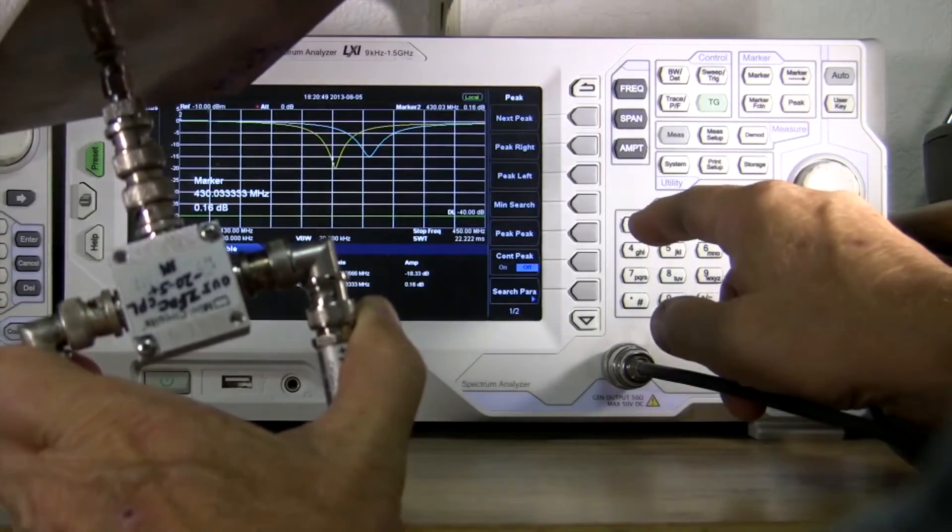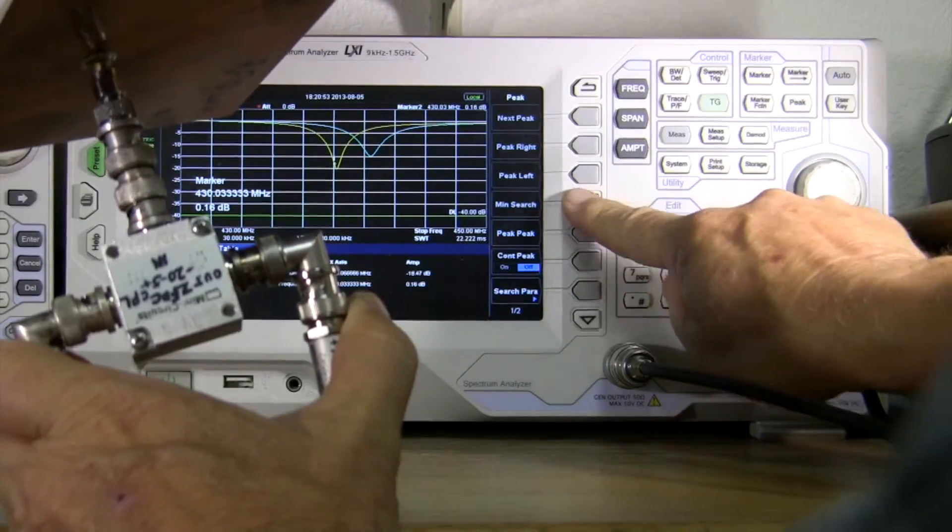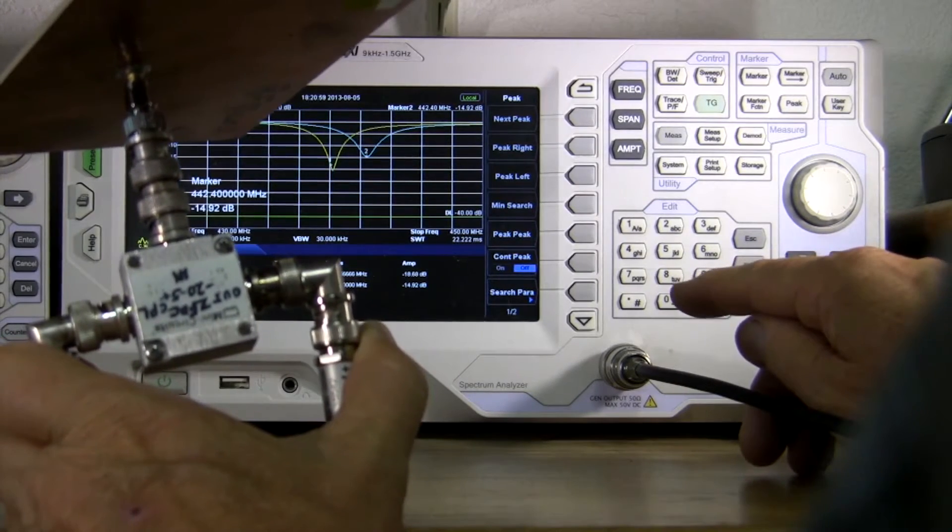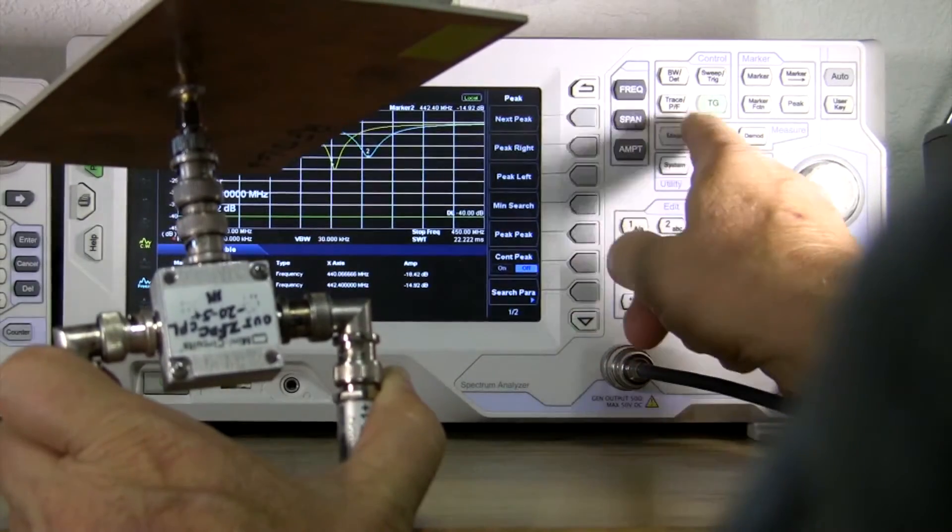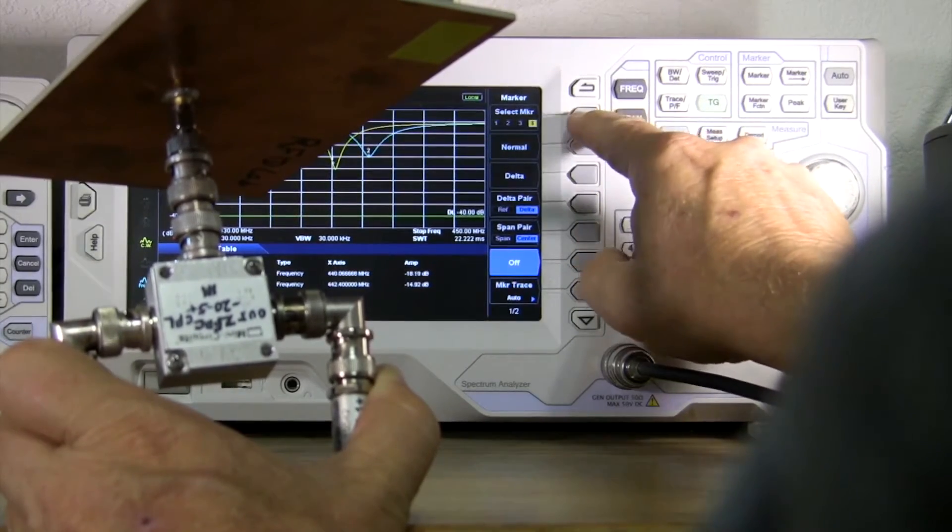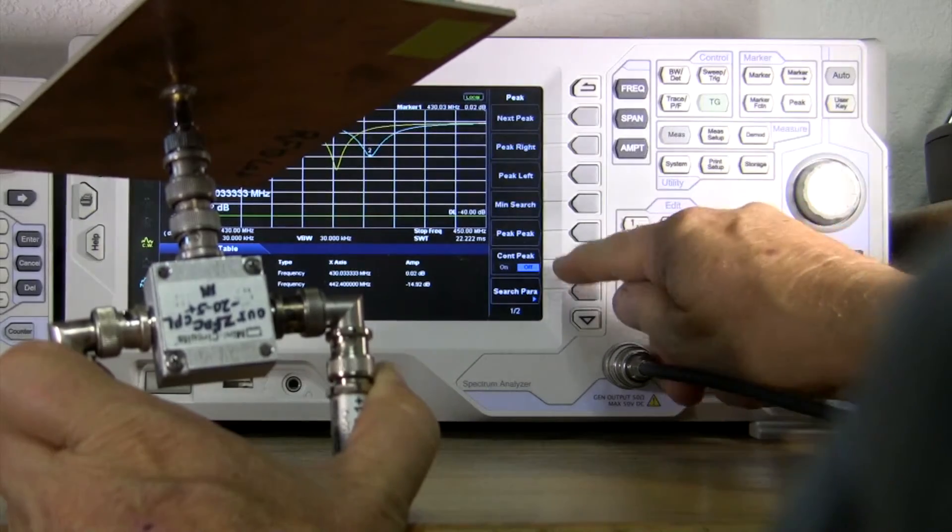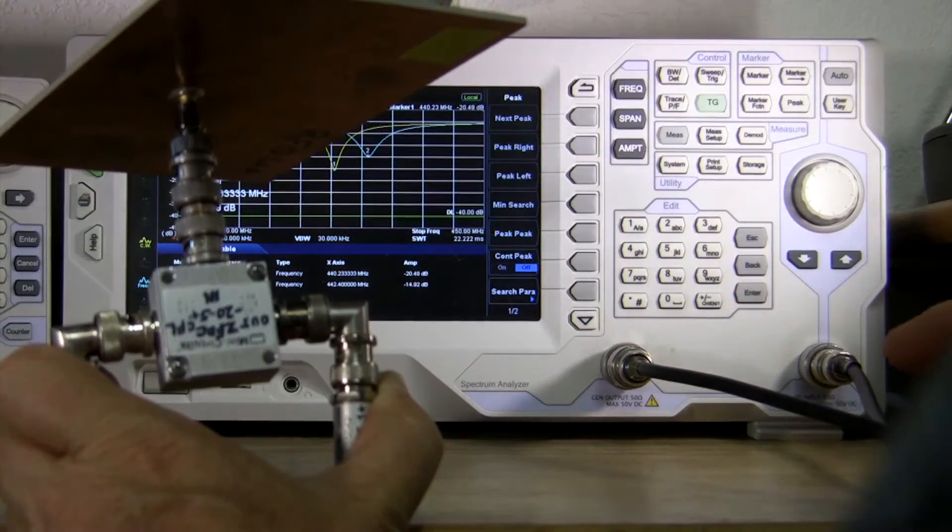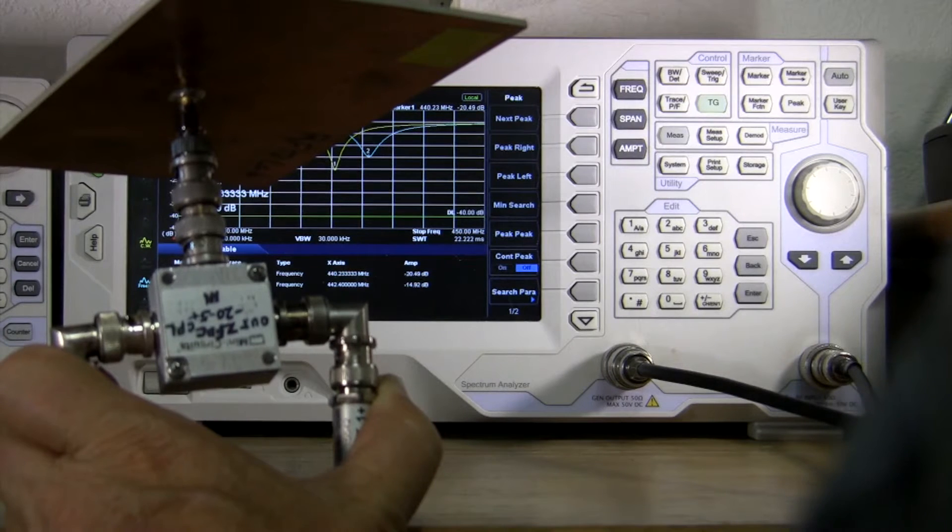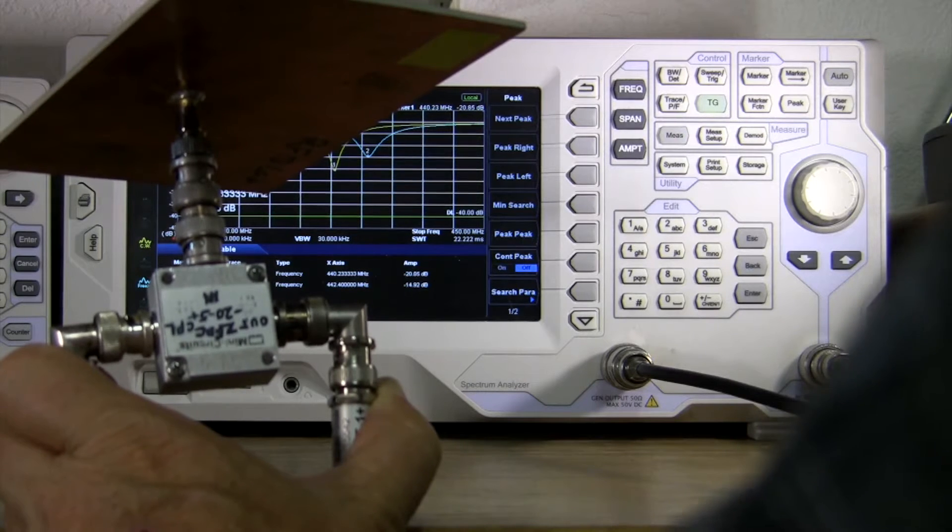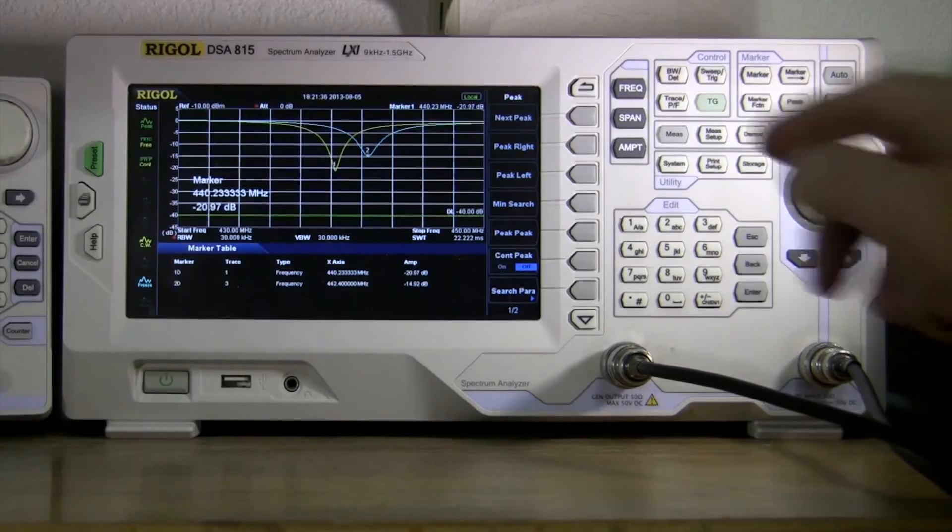We'll clear write it and there we have what it does at the moment. We'll go peak and minimum search. Marker one is the one I want. Peak, minimum search. There we go. So minus 20 dB is what it says here. 440.233. So that more or less squares with what was captured before. It's a little bit higher by a megahertz, but it's got a pretty good match when it's not on metal.